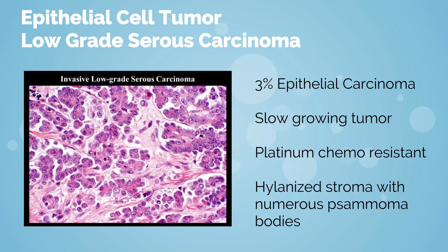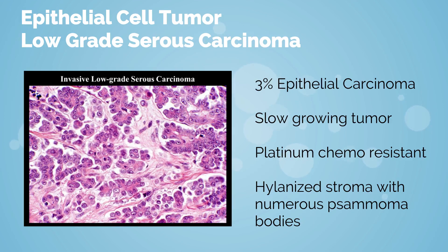About 3% of epithelial carcinomas are low-grade serous carcinomas. This is a slow-growing tumor and is resistant to platinum-based therapy. A key feature is the hyalinized stroma with numerous psammoma bodies.